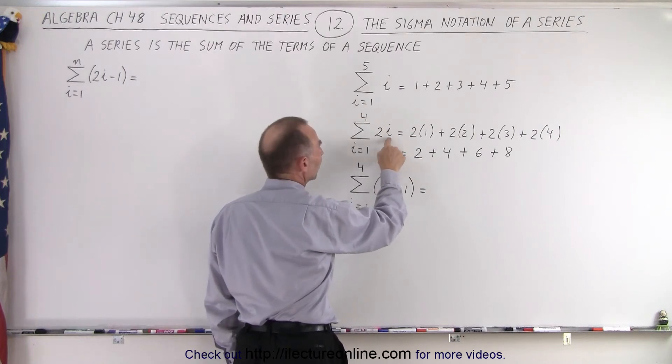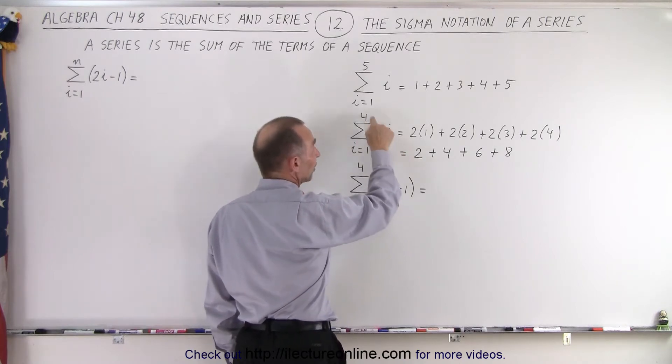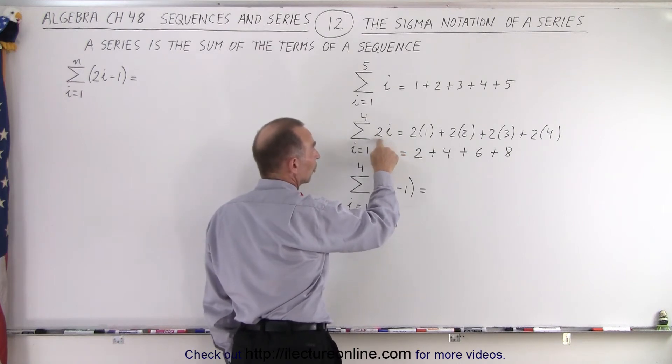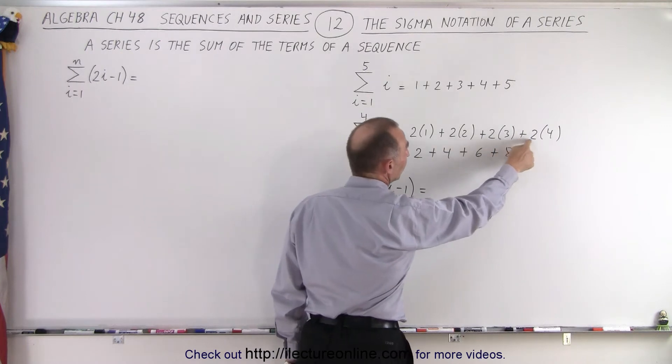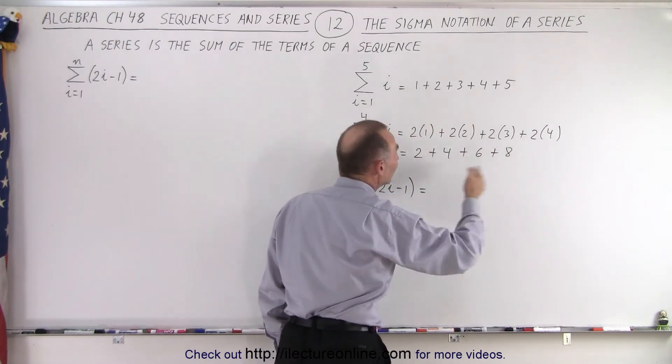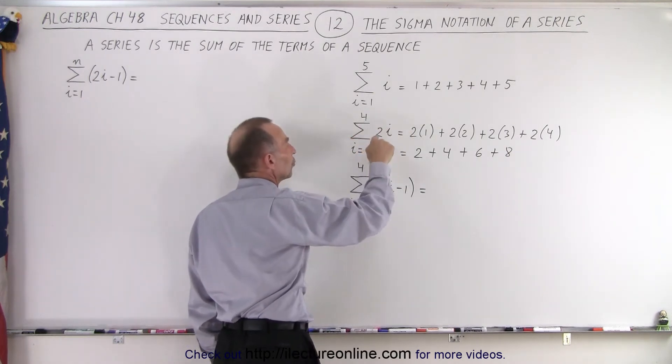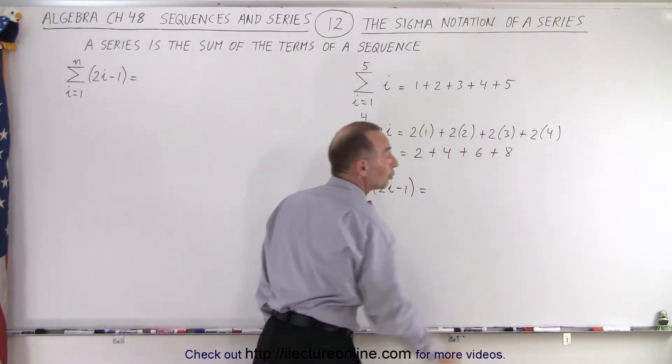So each time we plug in the value for i, i will become 1, then it will become 2, then it will become 3, then it will become 4. We stop at 4 because that's the upper limit and each time we multiply times 2. So 2 times 1 plus 2 times 2 plus 2 times 3 plus 2 times 4 or 2 plus 4 plus 6 plus 8. And that is the series that can be compactly written like this. So it's 2 times the number i when i goes from 1 to 4 and this means we're going to sum them all up. That's why we add up all those terms.